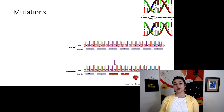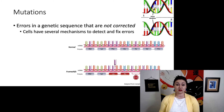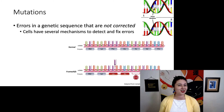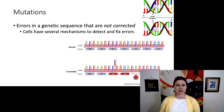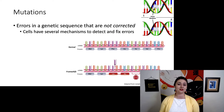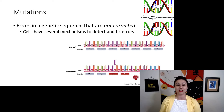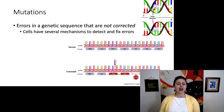Mutations are simply errors — mistakes in your genome that are not corrected. This is important because our cells have many different mechanisms to identify mistakes in the genome and to fix them. But sometimes they are not corrected before the cell divides, and then they are passed on to daughter cells. That is when they truly become a mutation. If it is simply an error that hasn't been corrected yet, it is not yet a mutation.